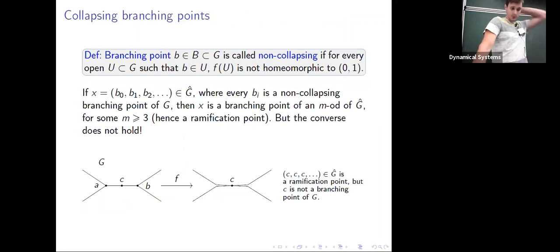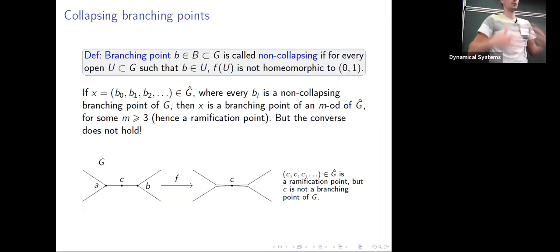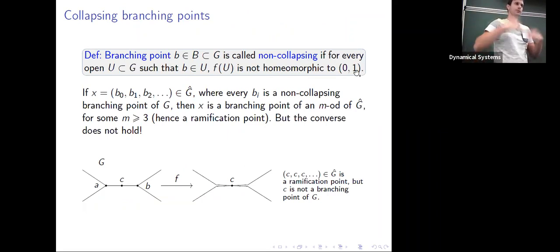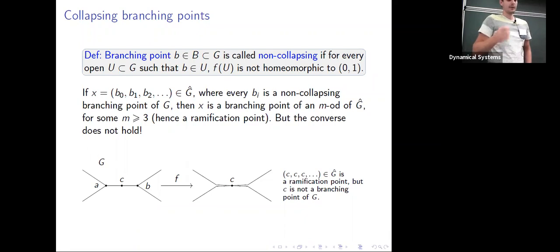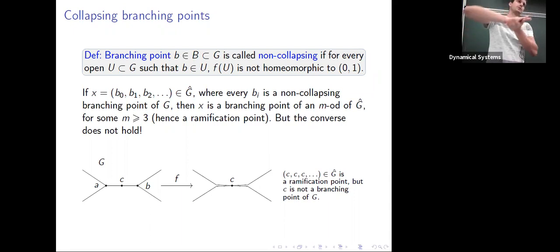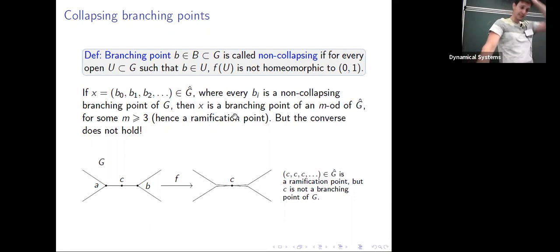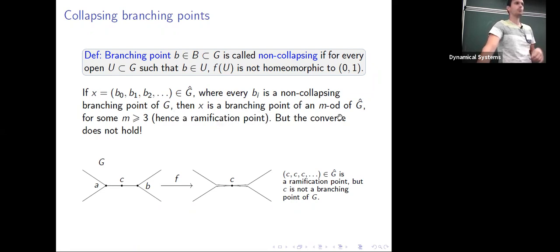What is also important is what these maps do with the branching points. We say a branching point b is non-collapsing if for every open set U containing b, the image f(U) is homeomorphic to [0,1]. If every coordinate of a point x is a non-collapsing branching point of G, then x is a branching point of the inverse limit — it's just a ramification point.